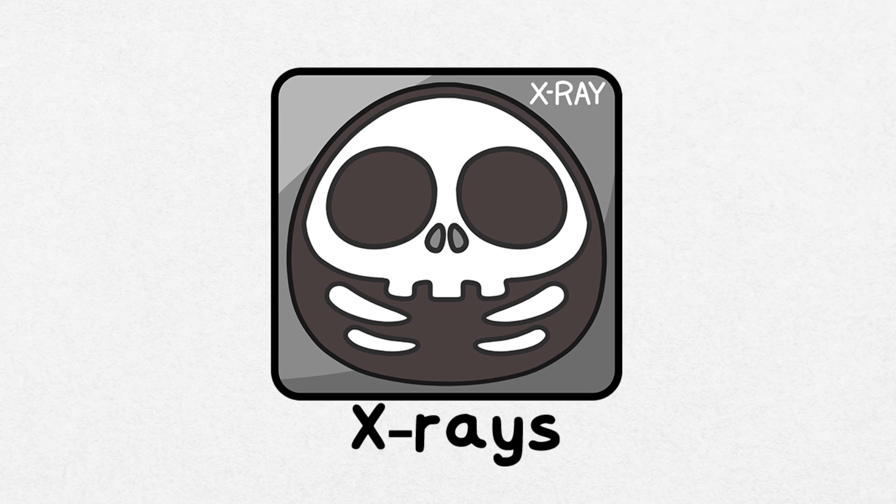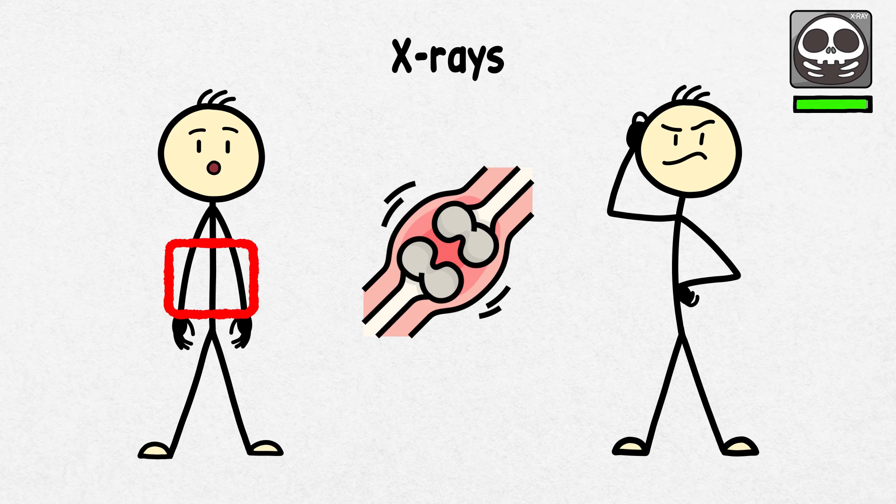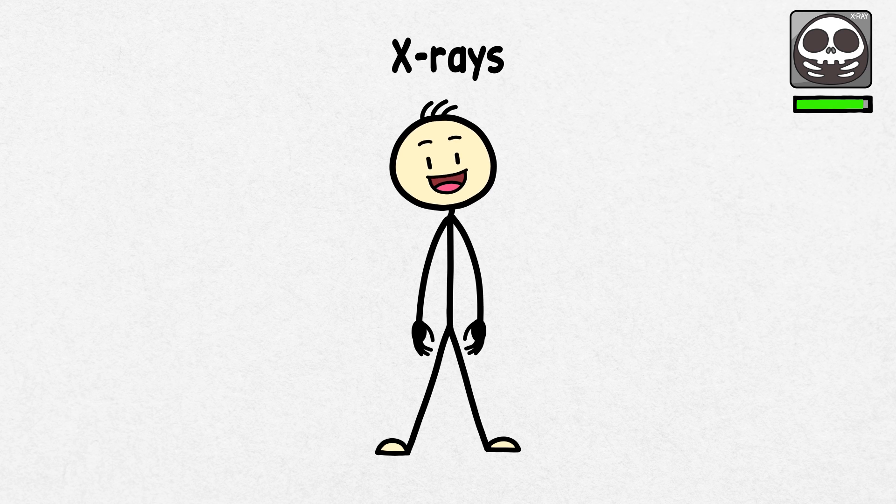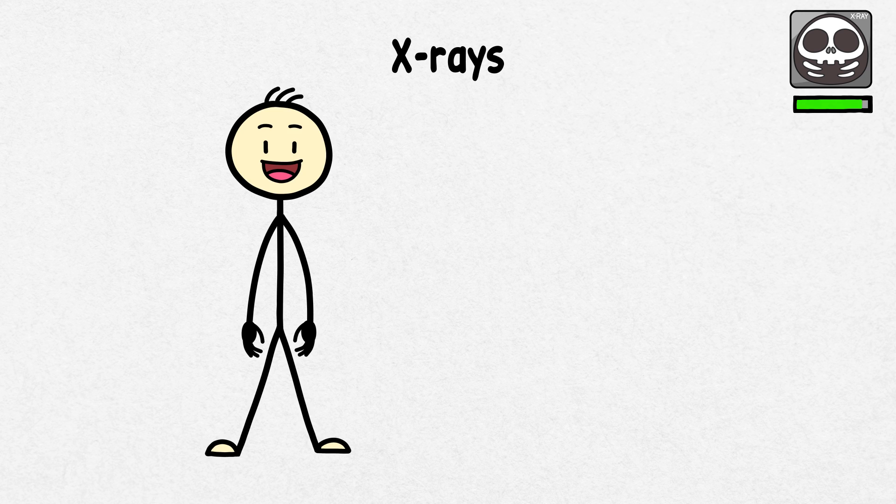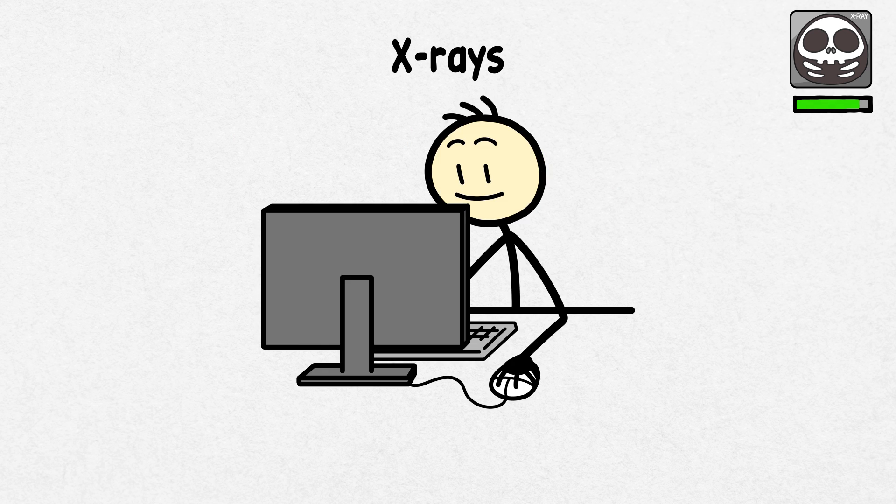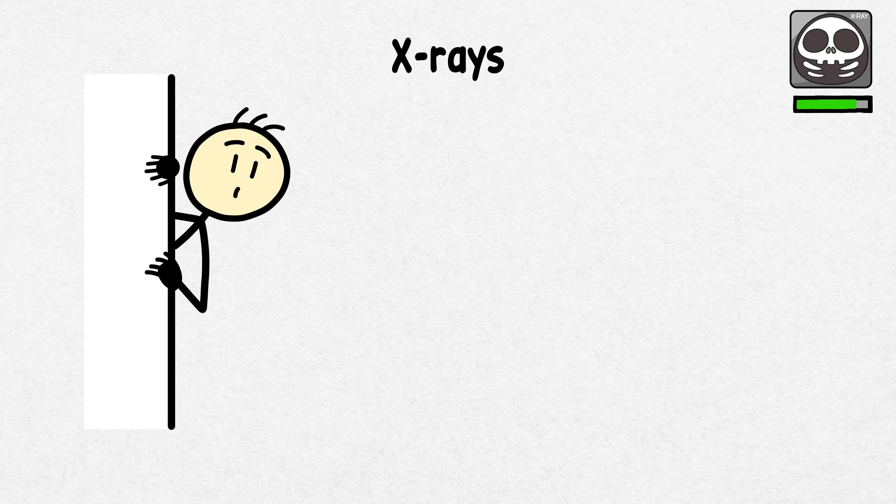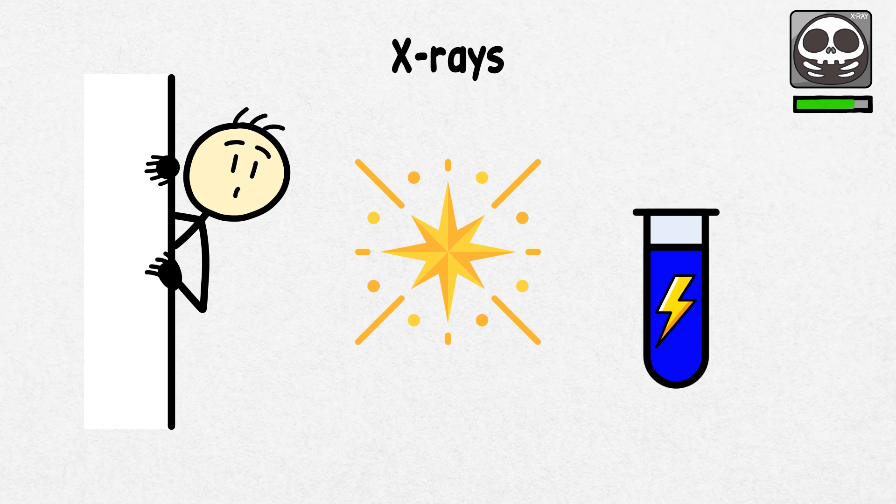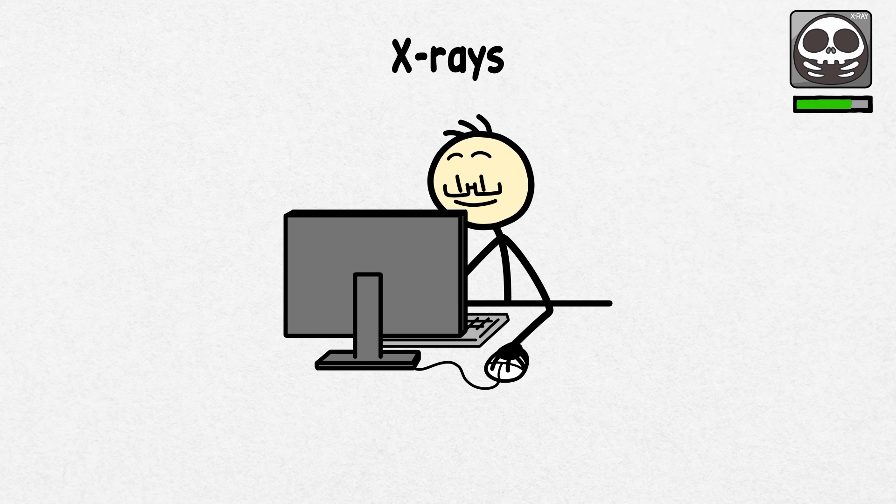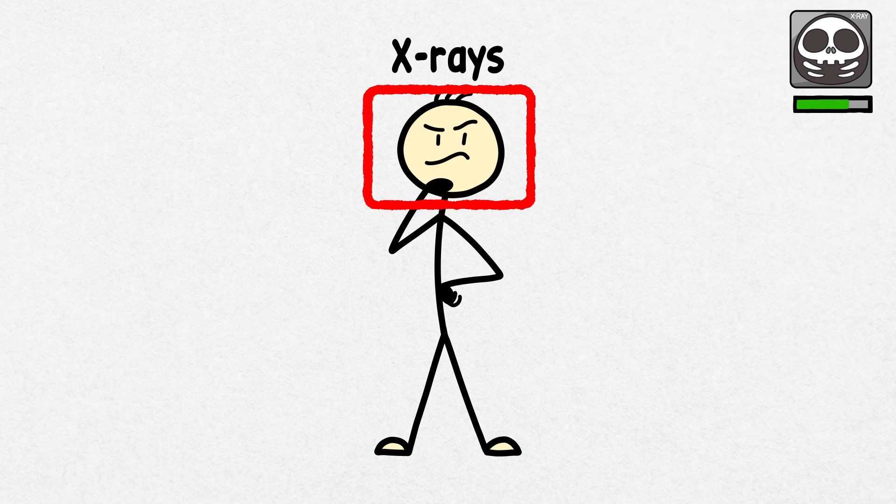X-rays. Ever wondered how spotting a broken bone or something hidden inside your body is actually possible? It's all thanks to X-rays, a common, everyday procedure now, but originally the result of one curious scientist's accidental discovery. As early as 1785, William Morgan, a British physician, observed glowing effects from electrical currents in a glass tube that had some of the properties of X-rays. He is also known as the first experimenter to have produced X-rays, but this he did unknowingly.